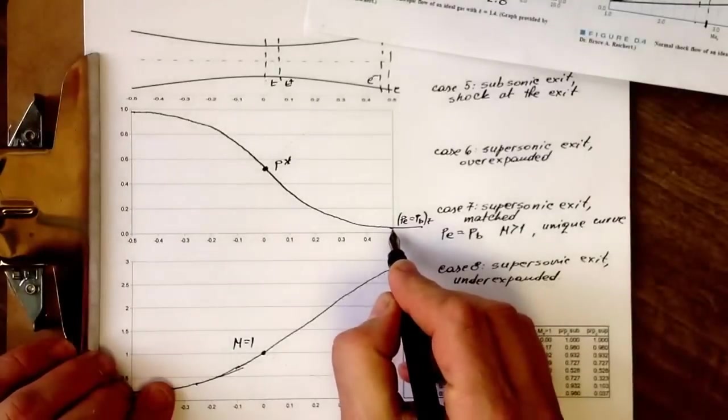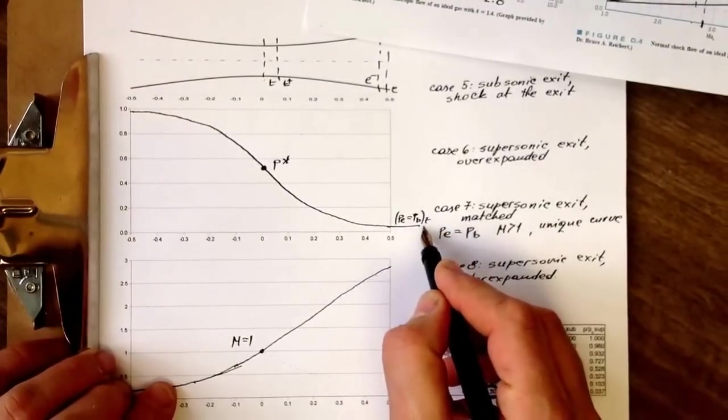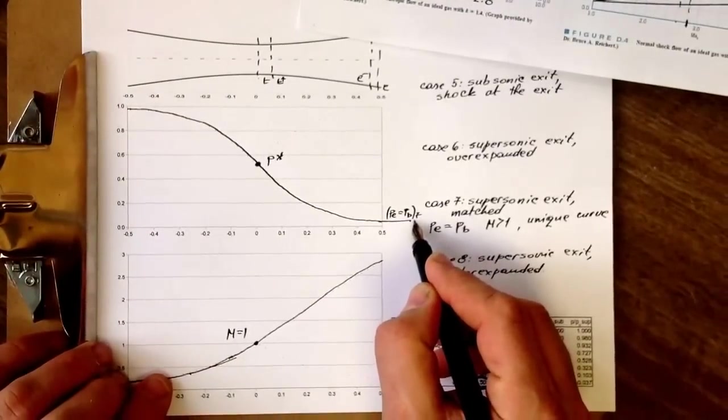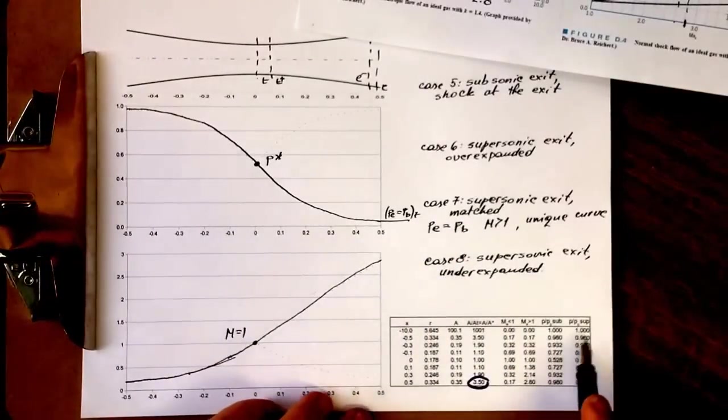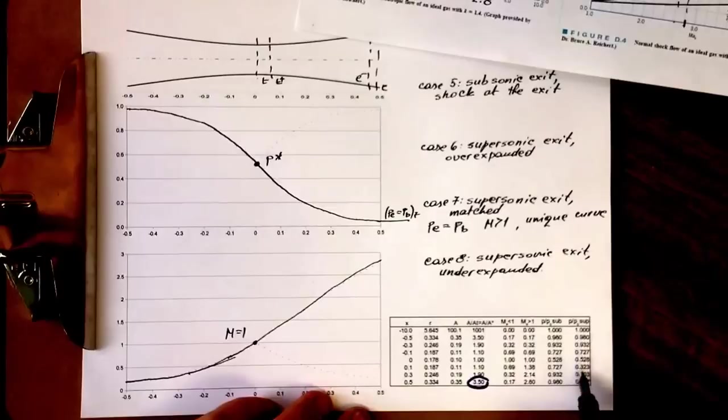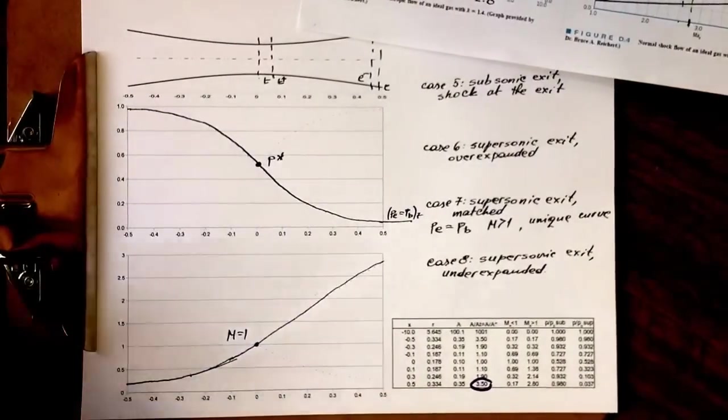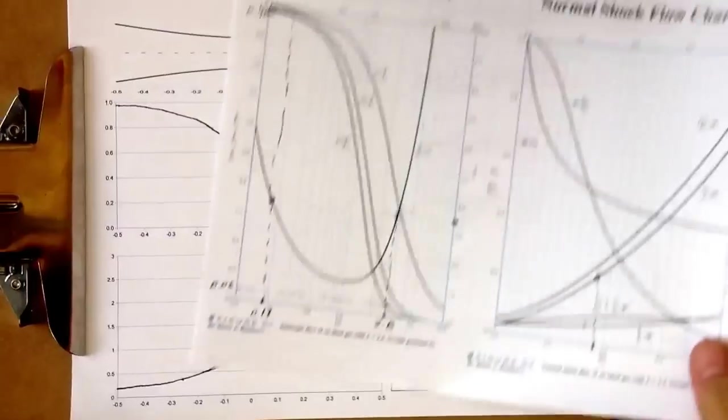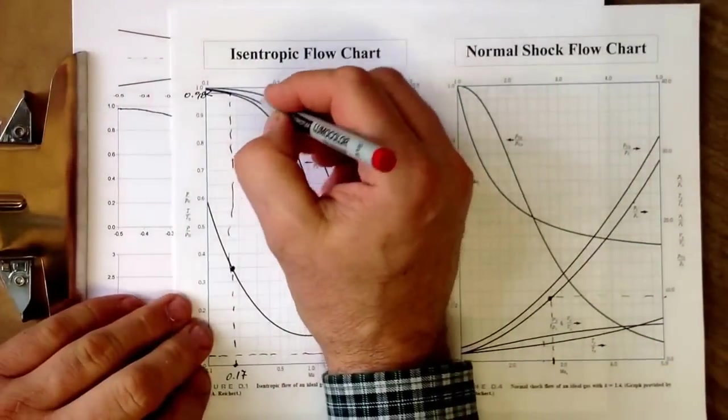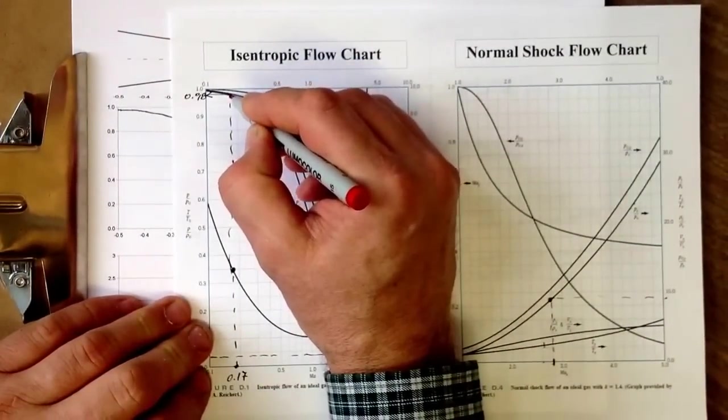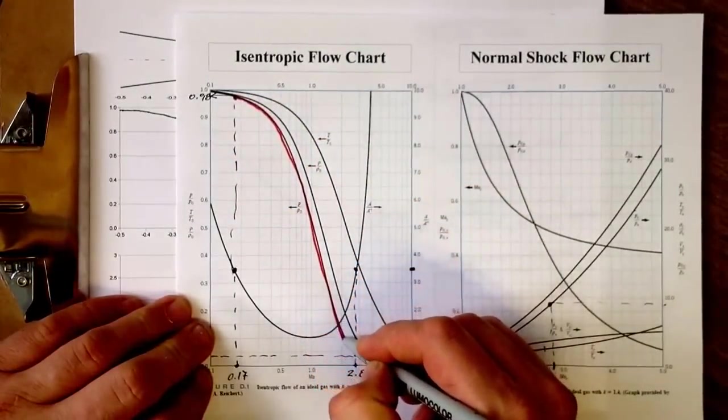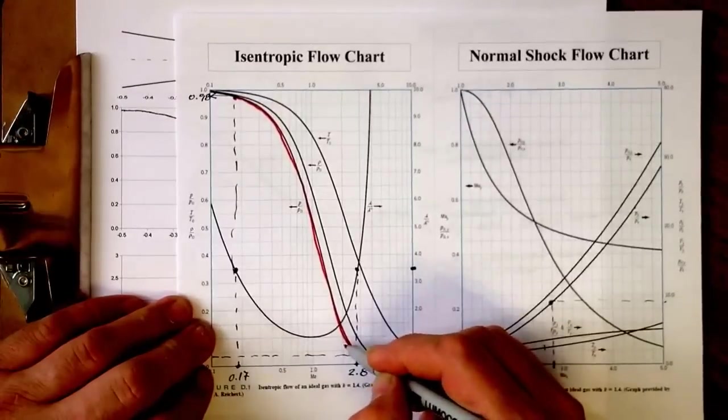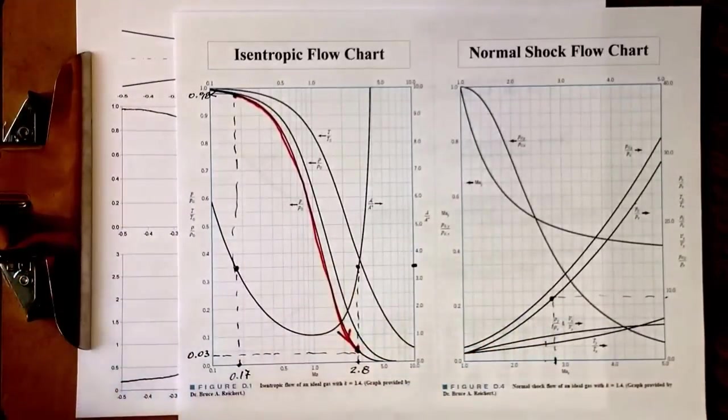So if the back pressure is exactly at 0.03—in this case indicated here as supersonic 0.037 as a more precise value—then the actual process will unfold essentially starting from this 0.98, going down and ending at this value.